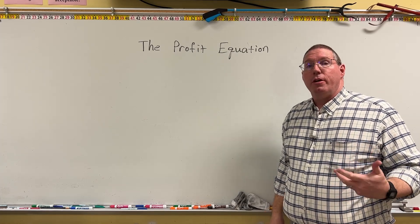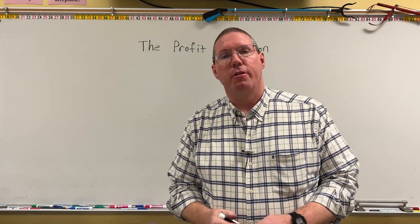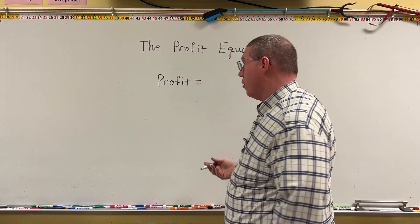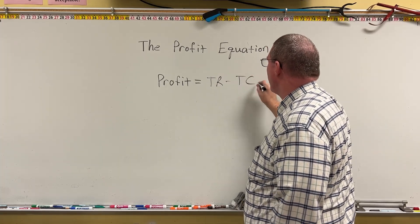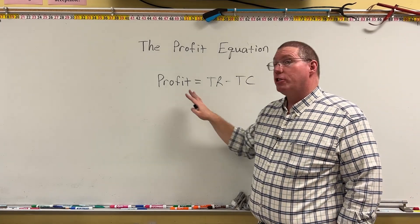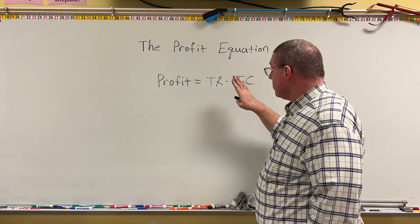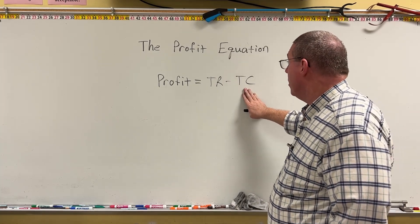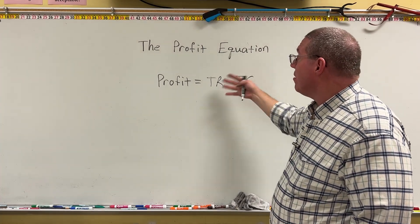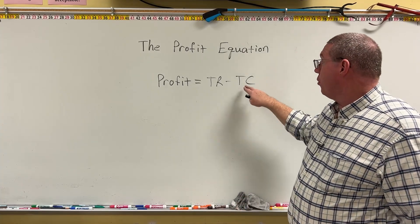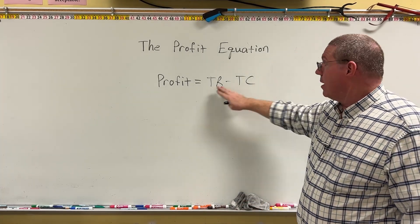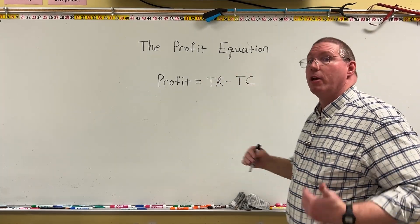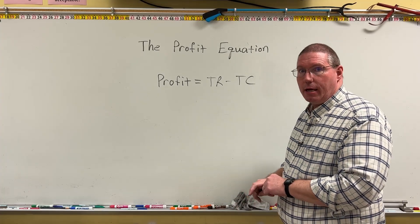Now that we know what profit, total revenue, and total cost are, we're ready to put them together into the profit equation. Profit earned by a firm is equal to total revenue — that's all the income — minus total cost. So profit equals total revenue minus total cost. If total cost is larger than total revenue, the money spent exceeds money earned, and we would have a loss.